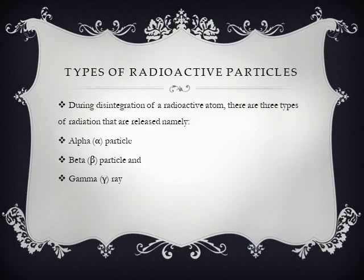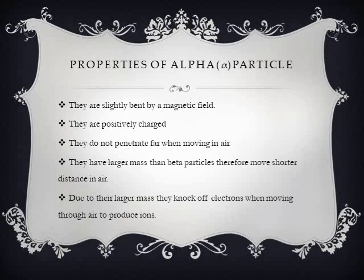The alpha particle is usually represented with a helium atom, the beta particle is represented with an electron, and then we have the gamma ray. Looking at the properties of alpha particles: alpha particles are slightly bent by a magnetic field. In an electric field they tend to move towards the negative side, meaning that they are positively charged particles. They do not penetrate very far in air — in fact their movement in air can be stopped by a notebook or a piece of paper. They have very large masses, larger than that of beta particles, so they tend to move very short distances in air. Due to their large mass they also knock off electrons when moving through air to produce ions.